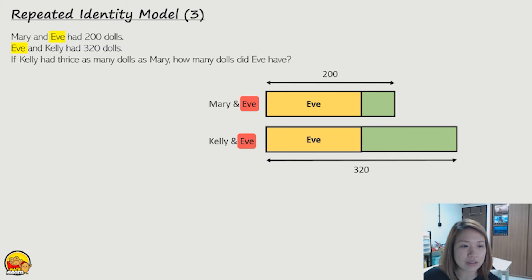Okay, now next. If the front part, the yellow part is Eve, this part at the back would belong to Mary, right? That's Mary. And if that's Mary, for the bottom bar, that would be Kelly.